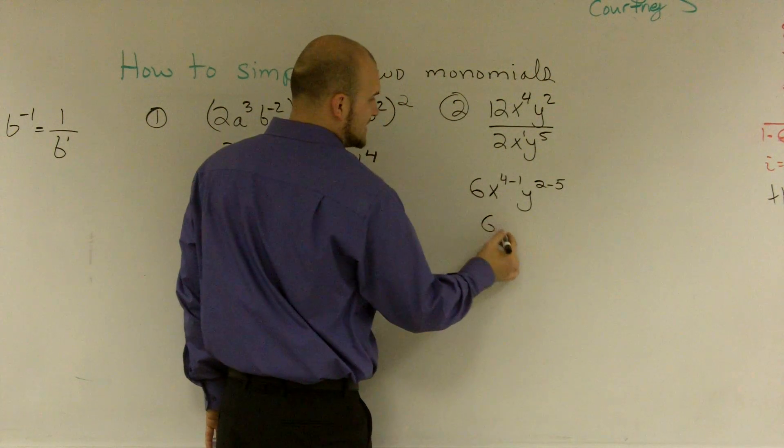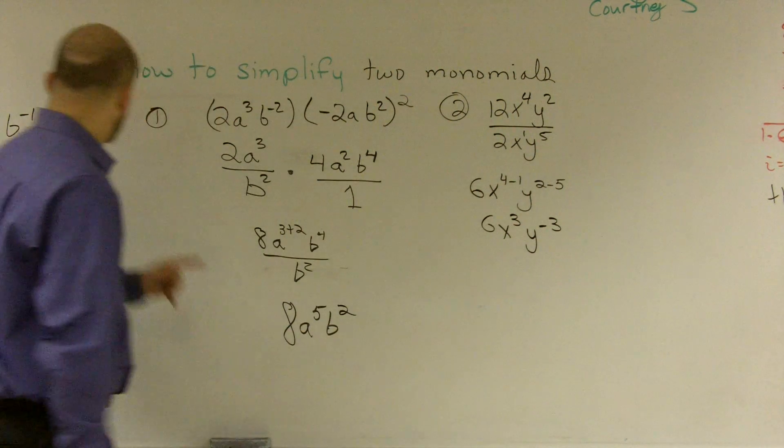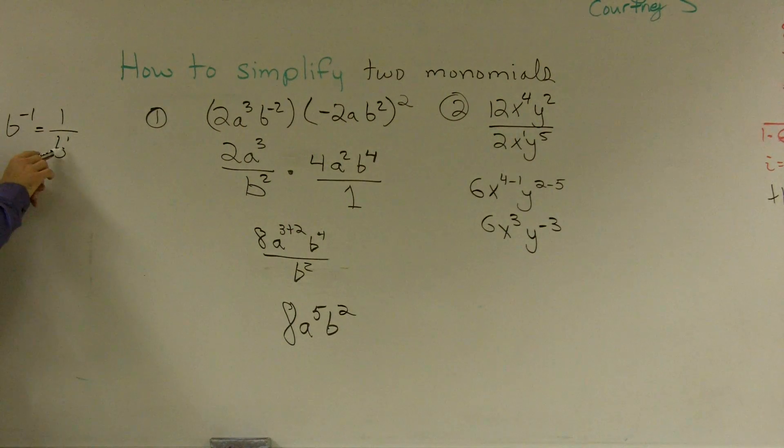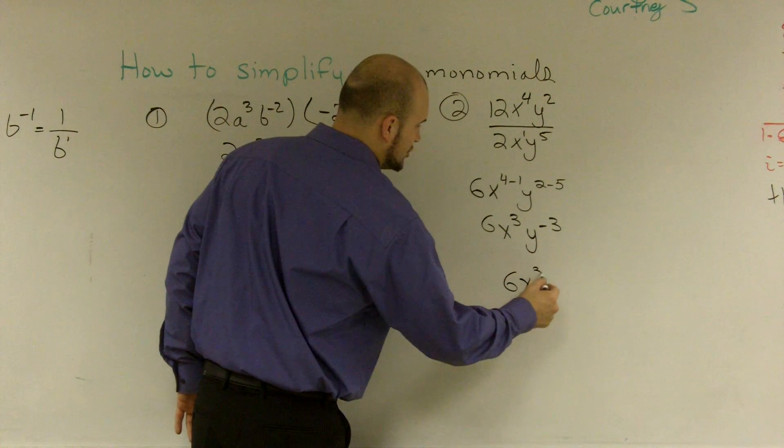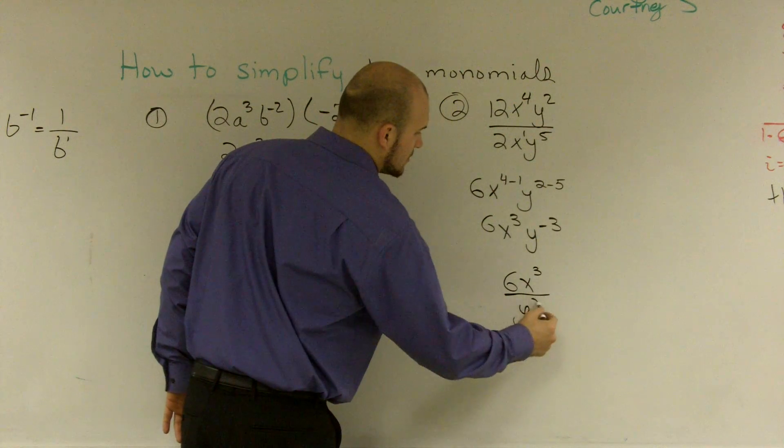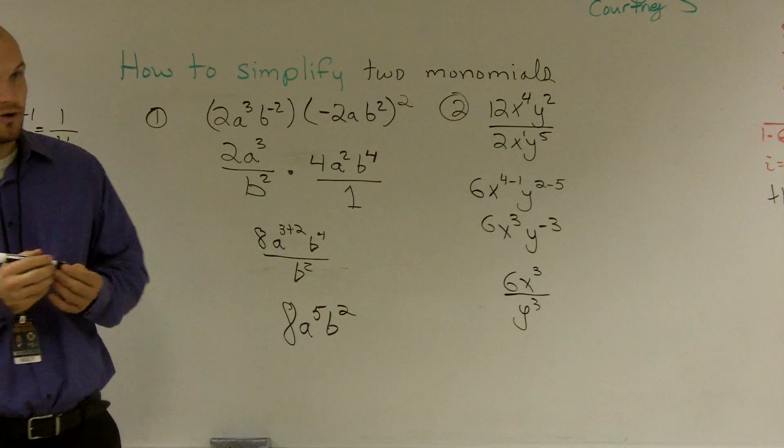So I've become 6, x to the 3rd, y to the negative 3rd. And, again, remember that a negative exponent is over 1. So this essentially can be rewritten as 6x cubed over y cubed. And that's how you simplify when given 2 monomials.